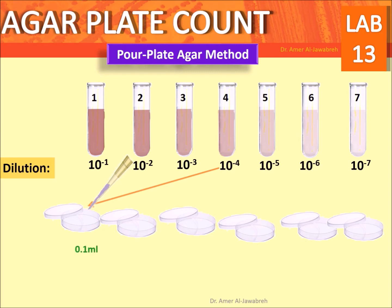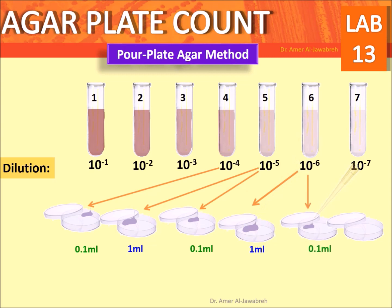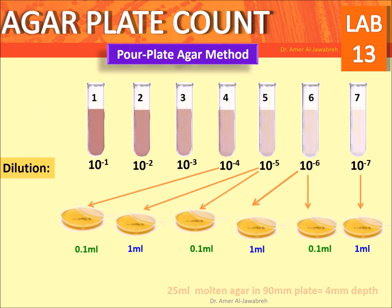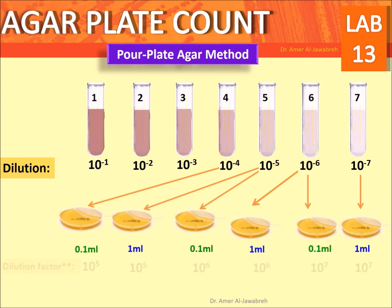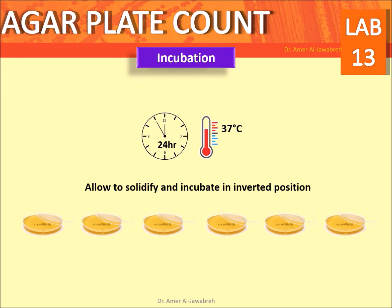Take 6 labeled 90 mm plates. Choose the highest four dilutions. Transfer 0.1 ml and 1 ml of bacterial suspension to plates as shown. After this, add 25 ml of molten agar — equivalent to a depth of 4 mm. Swirl gently to mix.